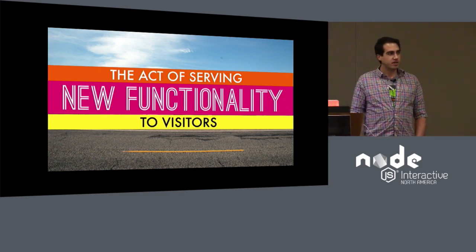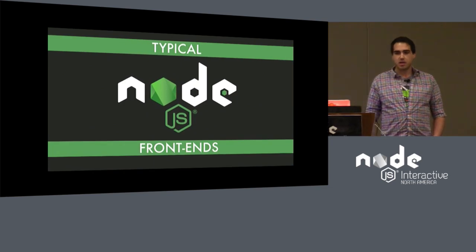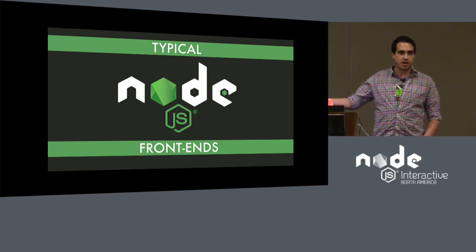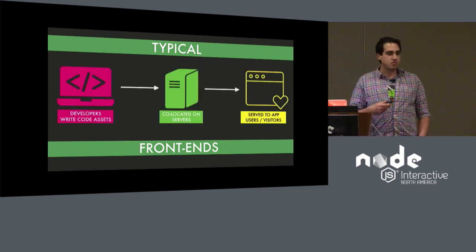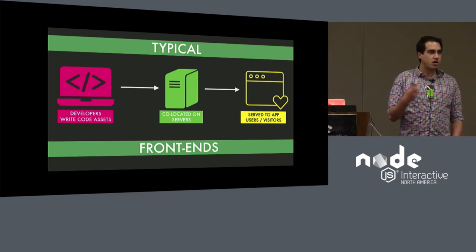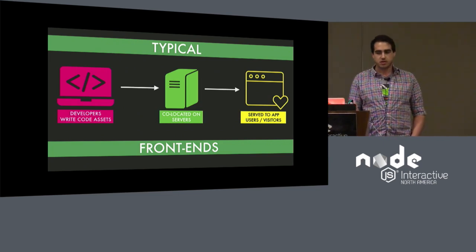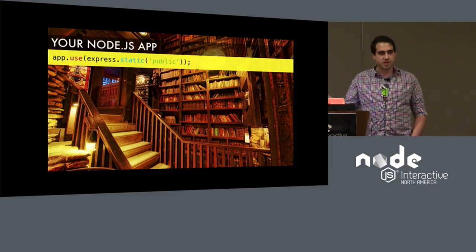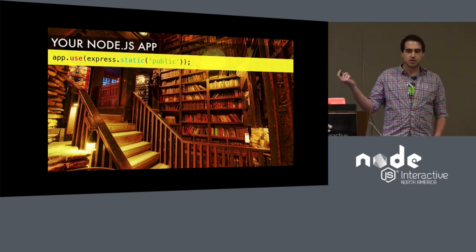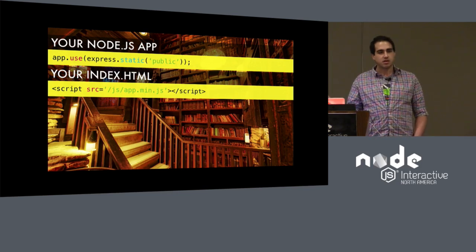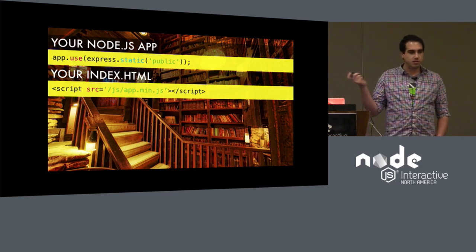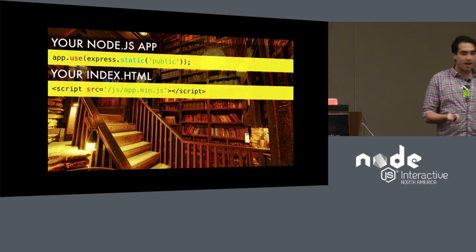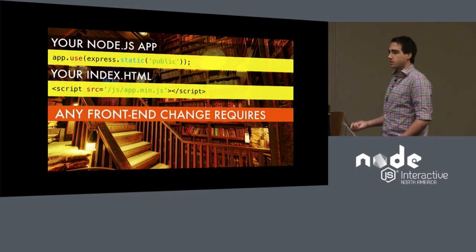Most Node.js front-ends work in the following way. You have some code asset that you've written — probably your React or Angular or jQuery app — that exists somewhere, and you push that onto your server, and that is co-located with the actual server. If anybody knows what I'm talking about, they've probably seen things like this: you have some Express app, you serve up the static middleware inside of your HTML somewhere, you have a link to something that is relative to your URL. That slash there is significant.